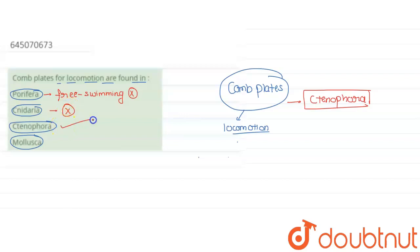Our right answer is option number C, that is Ctenophora. Why Ctenophora? Because it contains comb plates. How many comb plates does it contain? It contains 8 comb plates. So that's why it is our right answer.